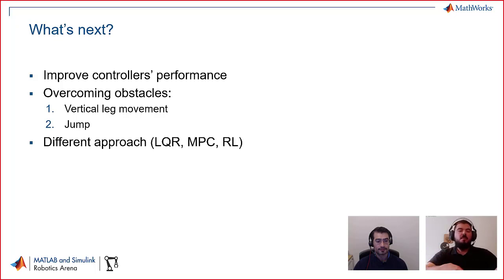And some other challenges to implement some other features for this robot could be to make it jump or to have each individual leg moving vertically to overcome obstacles. Now for some other different approaches to solve this challenge and make this robot work could be to implement a linear quadratic regulator, a model predictive control or reinforcement learning.